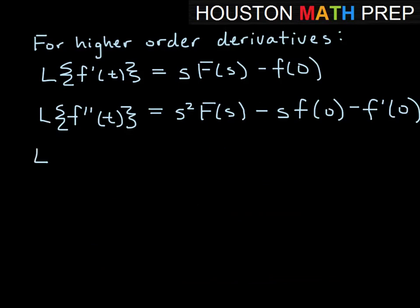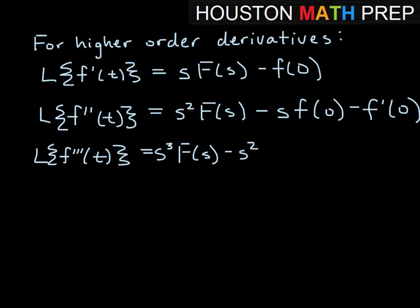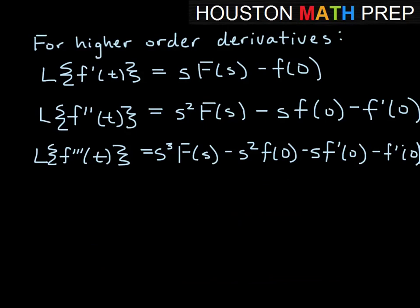For the third derivative, L{f triple prime of t} = s cubed F(s) minus s squared f(0) minus s f prime of 0 minus f double prime of 0. You can see the pattern: we start with the order of the derivative as the power of s times F(s), and then each term decreases the power of s by 1 while increasing the derivative order by 1.